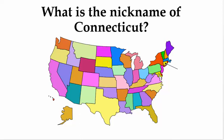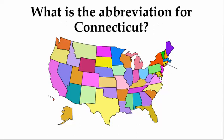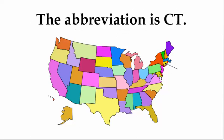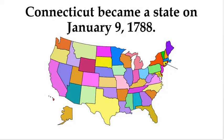What is the nickname of Connecticut? The nickname is the Constitution State. What is the abbreviation for Connecticut? The abbreviation is CT. When did Connecticut become a state? Connecticut became a state on January 9th, 1788.